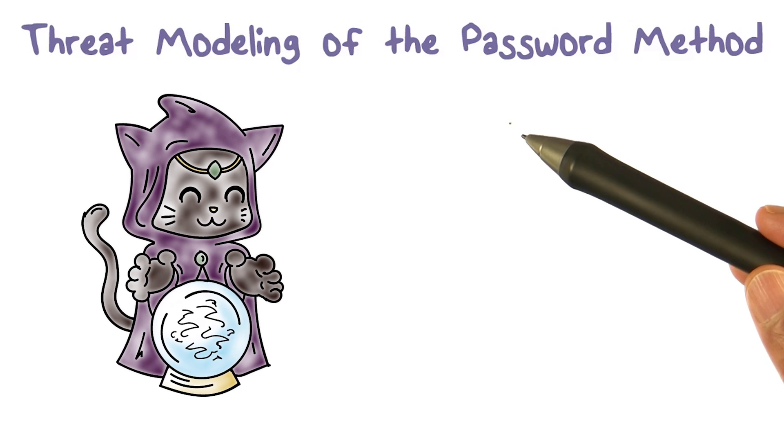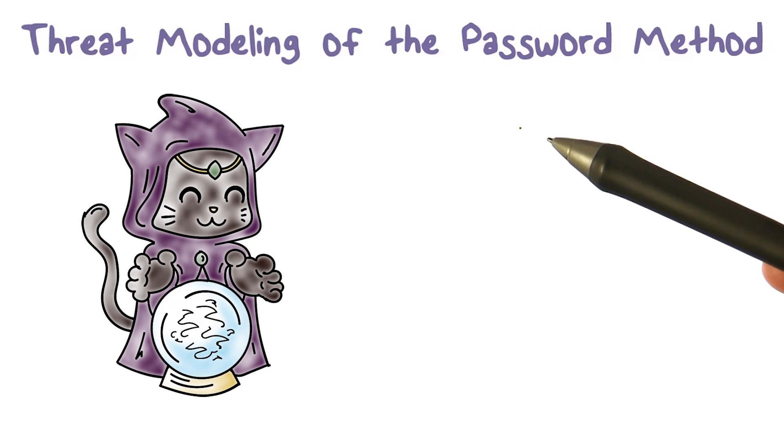In particular, what they're going to try to do is defeat the authentication system. Eve is going to try to successfully authenticate herself as Alice. In that case, she would have successfully compromised the authentication method.